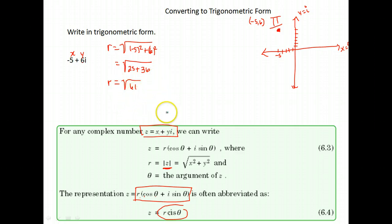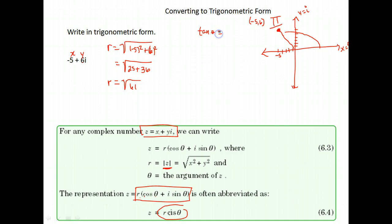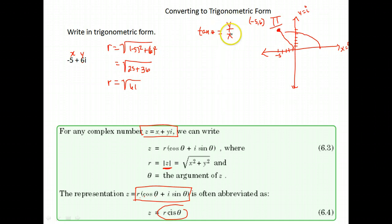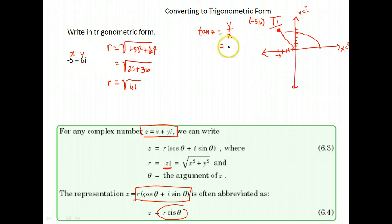The next thing is to find theta, my angle. To do that, we use tangent. On the unit circle, y was the sine value and tangent is sine over cosine, or y over x. Y is the imaginary part, so we have 6 over x which is negative 5. So the tangent of theta equals negative 6 fifths.